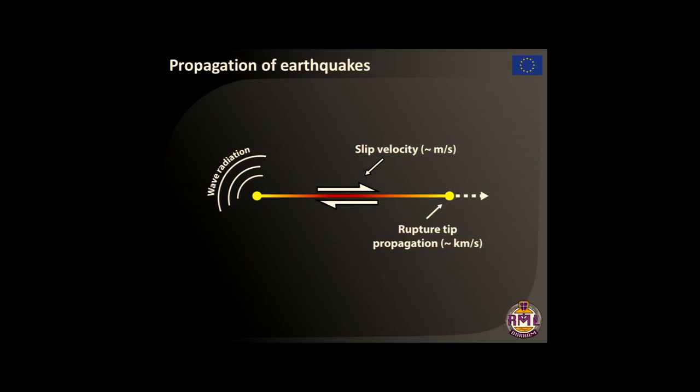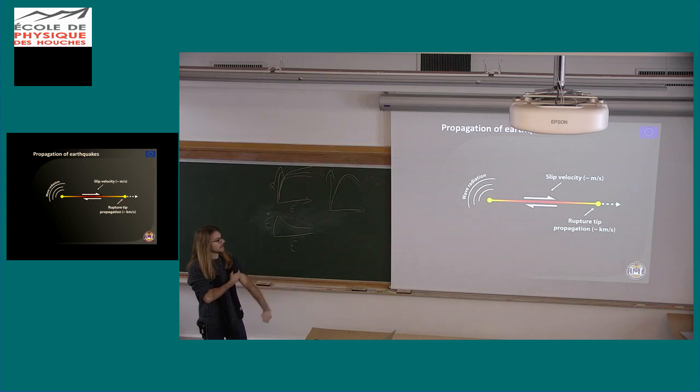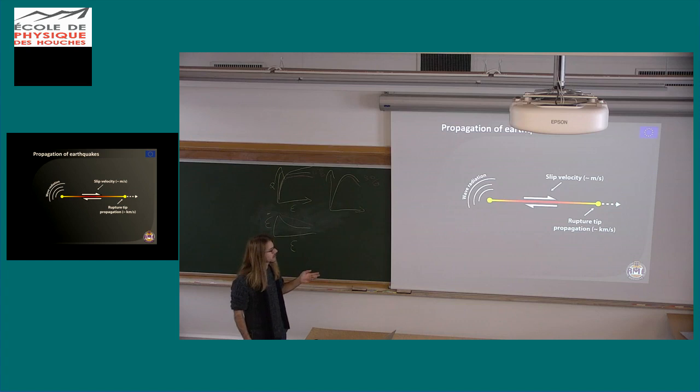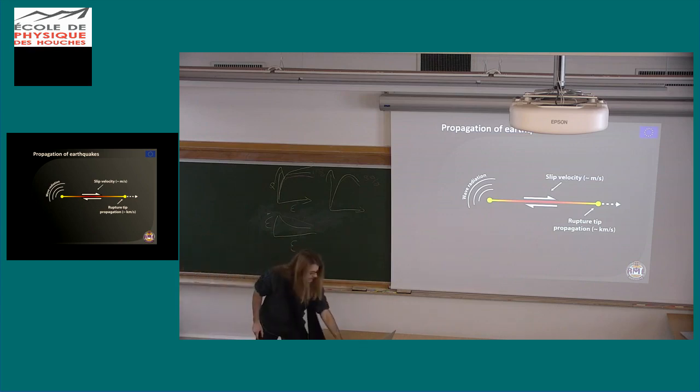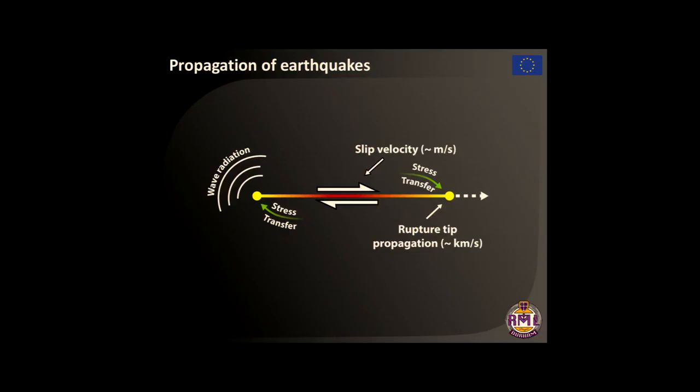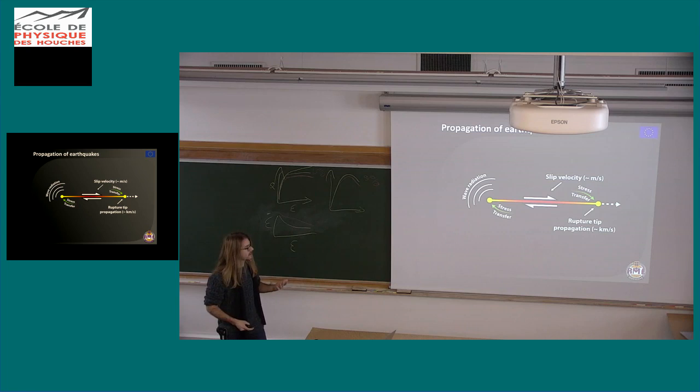But weakening along faults, we have seen it in the nice introduction today and the other days too. Why is it important? Because during earthquakes, the rupture tip propagates at very fast speed and it's fed by stress transfer that comes from the whole fault. This process is enhanced if the fault itself has a low friction coefficient because it needs to transfer stress towards the tip to render the mechanism more efficient.